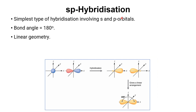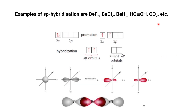SP hybridization involves one s orbital and one p orbital. This is the simplest type of hybridization, with a bond angle of 180 degrees and linear geometry. The spherical s orbital combines with the dumbbell-shaped p orbital, and their hybridized shapes combine to give linear geometry. Examples of sp hybridization include BeCl2, BeCl2, BeH2, ethyne (HC≡CH), CO2, and others.